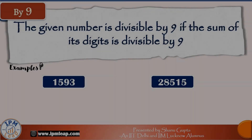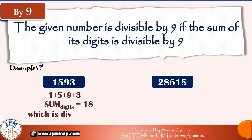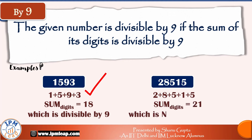The rule for 9 is similar to the rule for 3 — since 9 = 3 × 3. A number is divisible by 9 if the sum of its digits is divisible by 9. For 1593: digit sum is 1 + 5 + 9 + 3 = 18, which is divisible by 9, so 1593 is divisible by 9. For 28515: digit sum is 2 + 8 + 5 + 1 + 5 = 21, which is divisible by 3 but not by 9, so 28515 is divisible by 3 but not by 9.